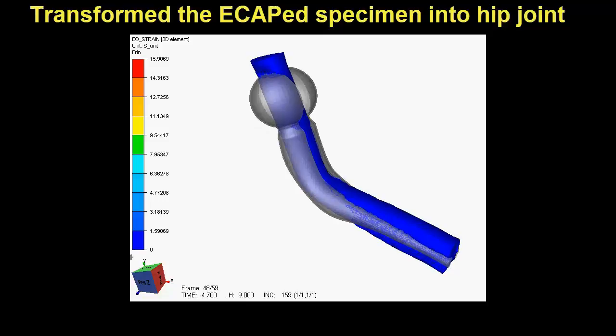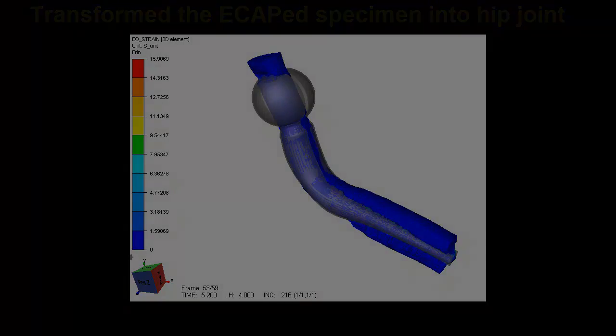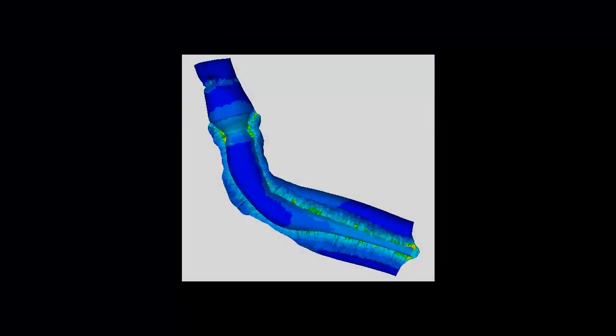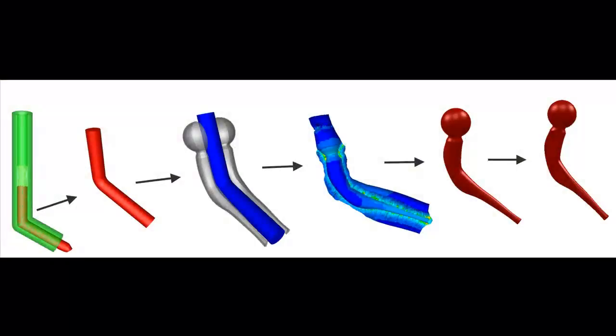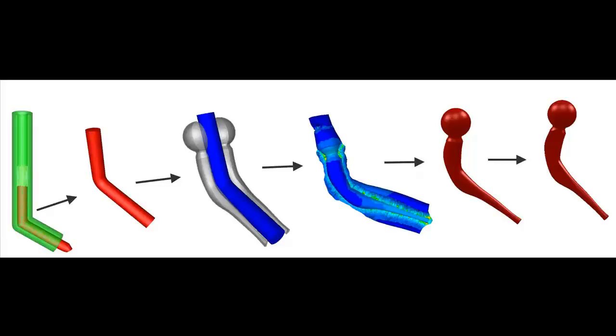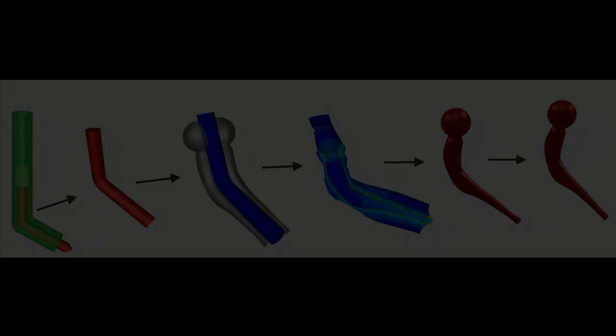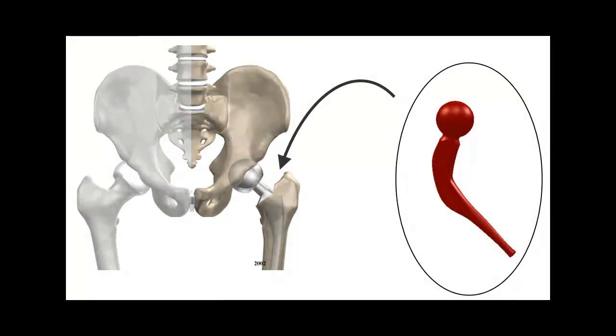Here in the present work, we try to make an artificial hip joint by using ECAP process specimen. First, a titanium alloy billet, 25 mm diameter and 200 mm length, is processed through an ECAP die having intersection angle phi 120 degrees and outer arc angle psi 20 degrees at room temperature.